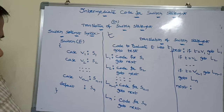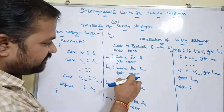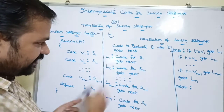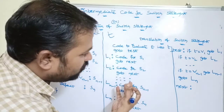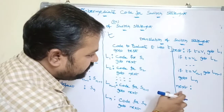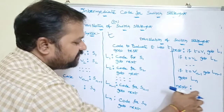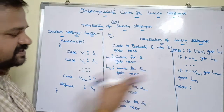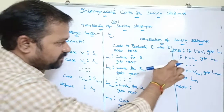For the break statement, we use 'goto next'. Whenever break is executed, control goes to the label 'next'. Since there are no statements at 'next:', execution ends there — control comes out of the switch.